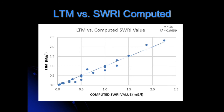This graph shows the light transmission method versus the Southwest Research Institute computed value. As you can see, this is an R-squared of 0.9659, and the data is right along the line, so it's a very accurate representation of the SWRI computed value — very, very close to the line.